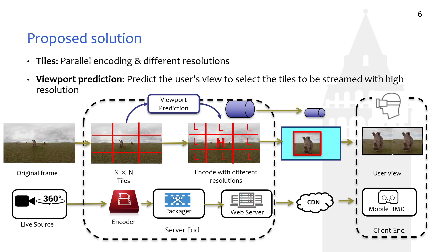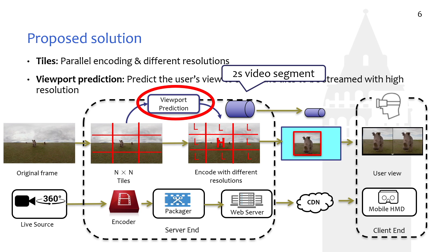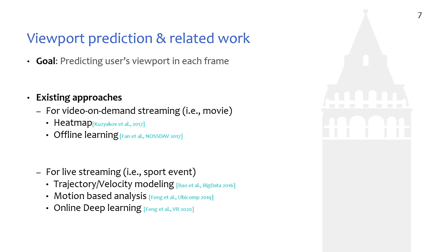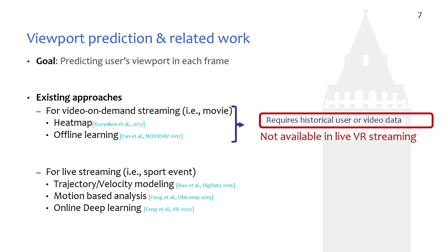The most important part of this flow is to select the tile that should be encoded with high resolution, which is called viewport prediction. Targeting this goal, there have been many methods proposed and implemented. Some focus on the video-on-demand system — they either calculate the heat map of user preference on video content to predict the viewport for new users, or train a deep neural network model to learn user preference. However, these methods require historical user trace data and video data, which is not available for the live VR video streaming system.